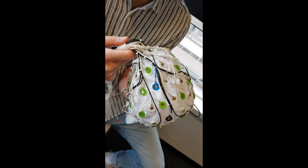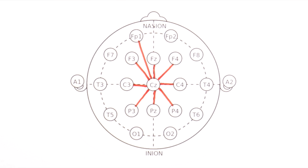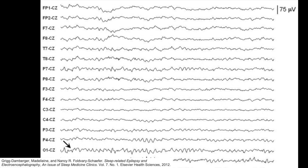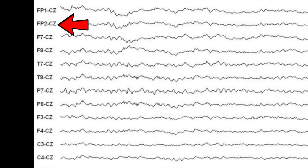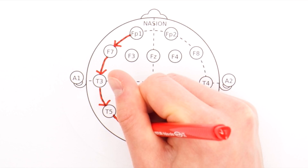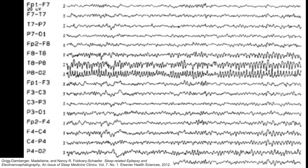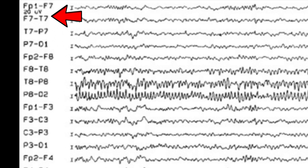A typical EEG uses 32 electrodes placed over the brain, and we need a way to pair up these electrodes. One approach is to compare every electrode to the same electrode — this produces something called a common reference montage, where each horizontal line shows the electrical difference from each electrode to the same electrode. Another approach is to compare every electrode to the electrode next to it, producing something called a bipolar montage, where each horizontal line shows the electrical difference from each electrode to the one next to it.